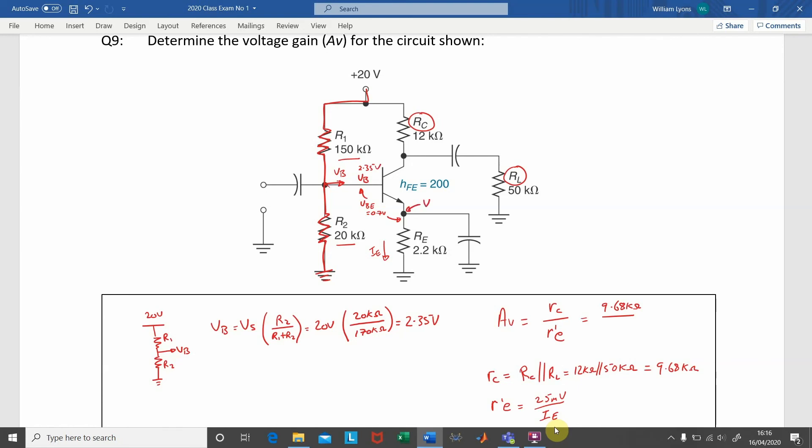We can now calculate the voltage VE at this point here being equal to the voltage at the base minus the voltage drop between the base emitter. So, that's VB minus VBE, which in this case is 2.35 volts minus 0.7 volts, which results in a VE of 1.65 volts.